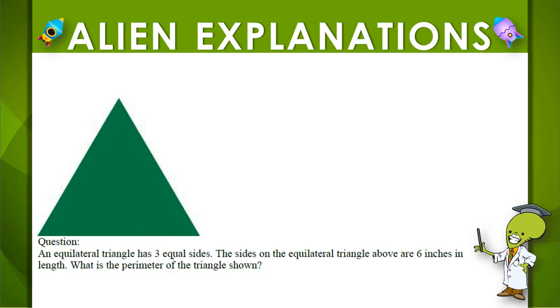So we are told that this triangle is an equilateral triangle, and that means that all of the three sides are the same length. It tells us that all of the sides are actually six inches long. So this side is six inches, this side is six inches, and the bottom side is six inches.